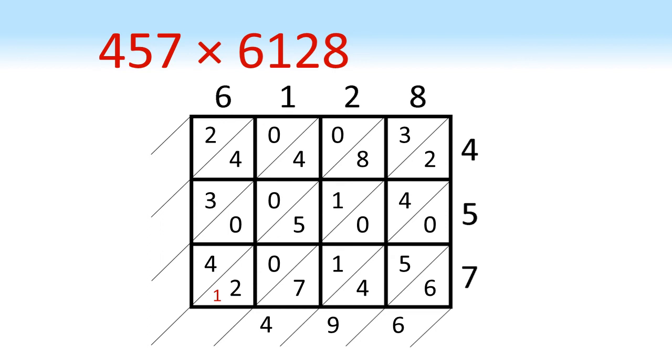We're now going to add 3, 8, 1, 5, 0, 2 and 1. This gives us 20. So we put the 0 in, carry the 2 to the next strip.